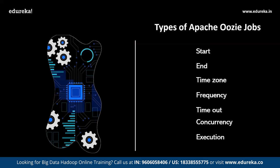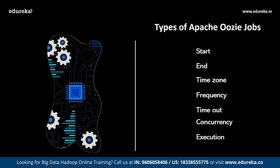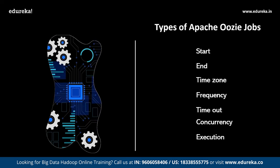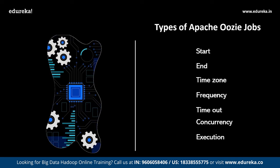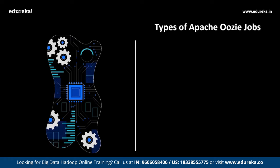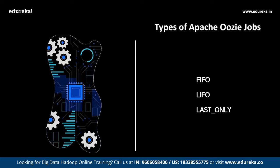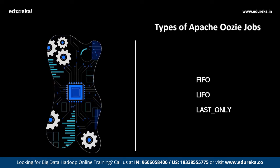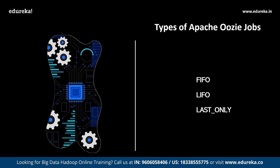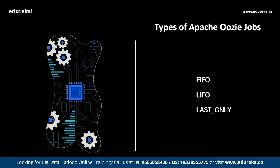A value of zero indicates all input events are satisfied at the time of action materialization and the action should time out immediately. A value of minus one indicates no timeout — the action will wait forever. The default value is minus one. Concurrency defines the maximum number of actions for a job that can run simultaneously; the default is one. Execution specifies the execution order, which can be FIFO (first in first out) or LIFO (last in first out). If a configuration property used in the definition is not provided when submitting the coordinator job, the job submission will fail.